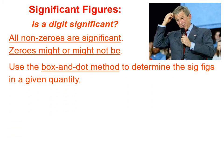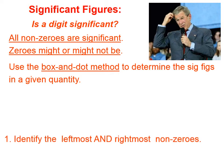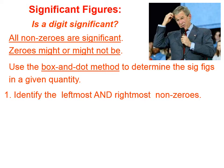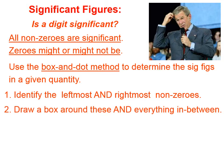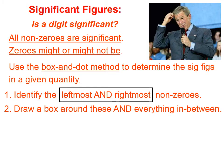I use the box and dot method to determine the sig figs in a given quantity. Here's how you do it: you identify the leftmost and rightmost non-zeros in your quantity. Then you draw a box around the leftmost and the rightmost non-zero and everything in between them. We've found the leftmost non-zero and the rightmost non-zero, and we've drawn a box around them and everything that's in between them.